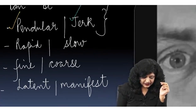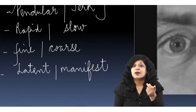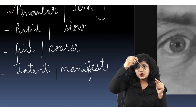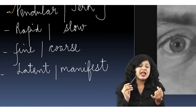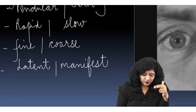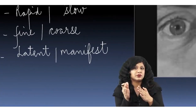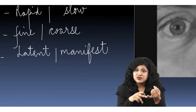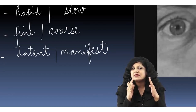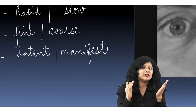Nystagmus can involve rapid movements, slow movements, or a combination — as in jerk, where it goes slow first and comes back with a jerk. The movements can also be fine or coarse, similar to how we have fine tremors and coarse tremors. When it comes to eyeball movements, these can also be fine or coarse.